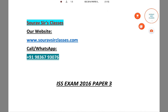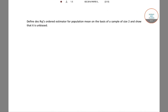Here we have to define the DESRAS order estimator for population mean. On the basis of a sample of size 2, we have to show that this order estimator is unbiased. The size of the sample is 2.